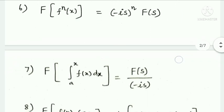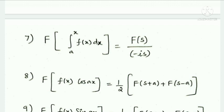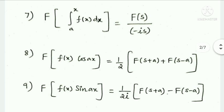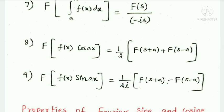Fourier Transform of the integral from a to x of f(s) ds equals F(S) divided by (−iS). Next, Fourier Transform of f(x)·cos(ax) equals (1/2) times [F(S+a) + F(S−a)]. And Fourier Transform of f(x)·sin(ax) equals (1/2i) times [F(S+a) − F(S−a)].